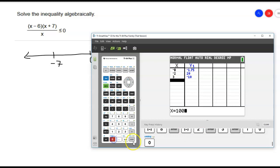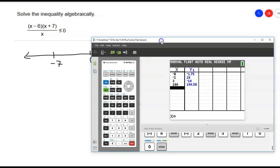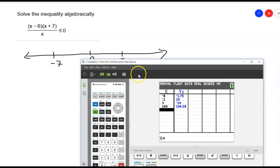Notice I get a negative y value. And then above 6, let's pick 100 just to be crazy. And you'll see here now I get a positive value.